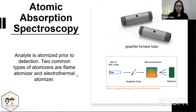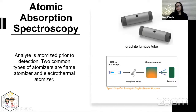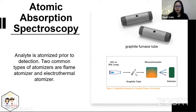The other type of atomizer is an electrothermal atomizer. An example is a graphite furnace tube, where the sample is introduced into a graphite tube that is heated by resistive heating. This converts the sample into free atoms. This method has more sensitivity because the sample is more contained in the graphite tube. An incident beam interacts with the sample, then the light gets filtered and detected for further signal processing.